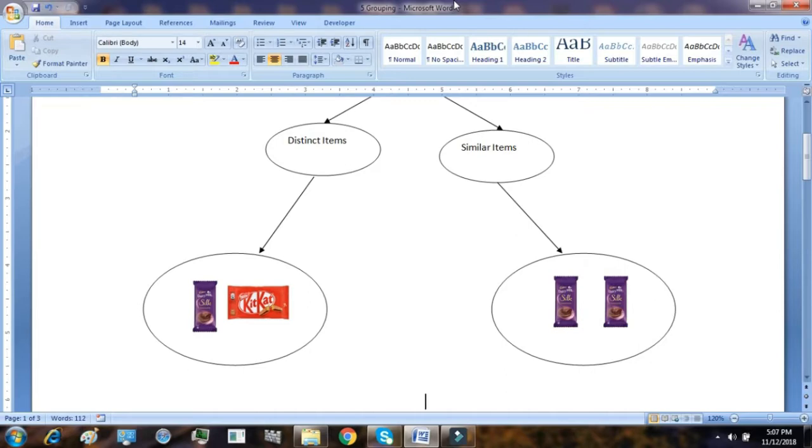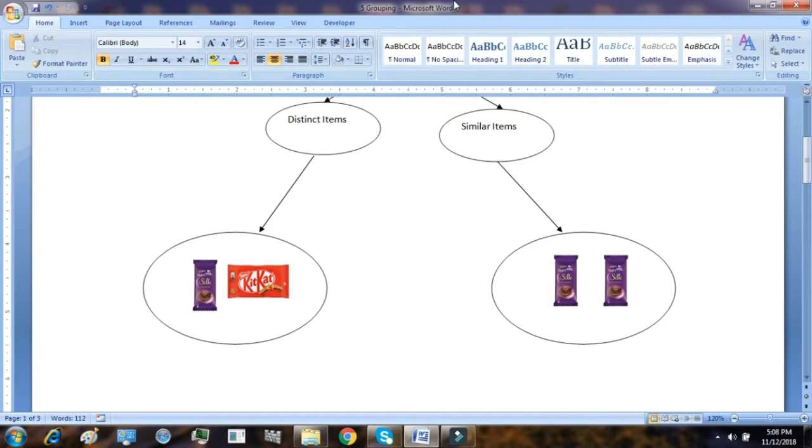Suppose I have some chocolates. For the first type of grouping of distinct items, I have a Dairy Milk chocolate and a KitKat chocolate. These are both chocolates but these are distinct items. I can clearly distinguish between them. Next comes with the similar items. Suppose I have both the chocolates are Dairy Milk but these are similar items. Now, how do you deal with these distinct items and similar items? Let us see.